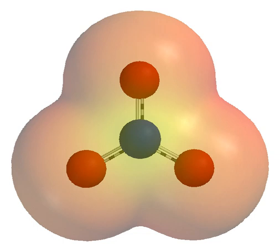A cation is a positively charged ion with fewer electrons than protons, while an anion is negatively charged with more electrons than protons.